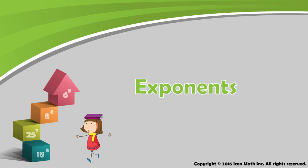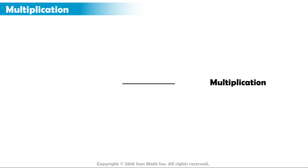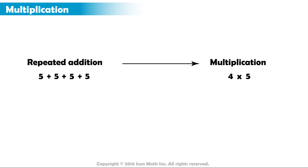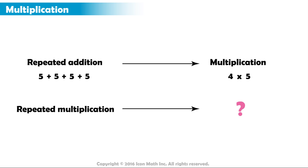Exponents. You've learned in the past that multiplication is a way of representing repeated addition. 5 plus 5 plus 5 plus 5 can be written faster as 4 times 5. But do you know what is used to represent repeated multiplication? 5 times 5 times 5 times 5 can be written faster as 5 to the power of 4, or 5 to the fourth power.